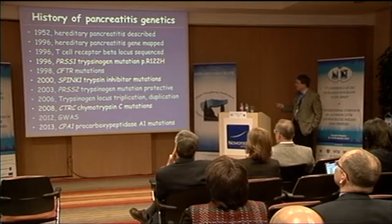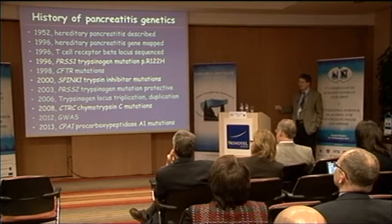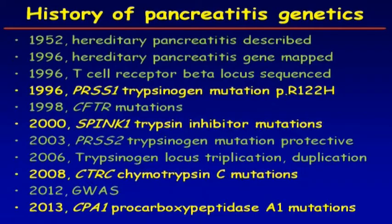Skipping CFTR as was discussed — trypsin inhibitors (pink one) was the next discovery, and then anionic trypsinogen, a protective mutation, was discovered. Trypsinogen locus triplication/duplication was described in 2006. Chymotrypsin C as a trypsin-degrading enzyme was described in 2008. Even the 2012 GWAS study found trypsinogen variation which is important. So there's a long line of trypsin in our history, and that's why we still believe in trypsin, even though the latest addition — the CPA1 mutation — seems to deviate from this paradigm a little bit.